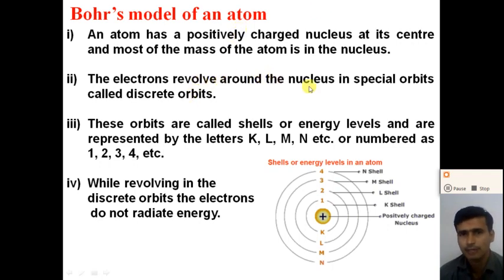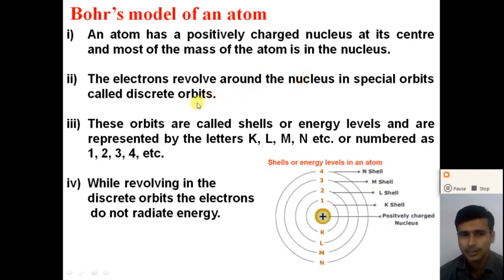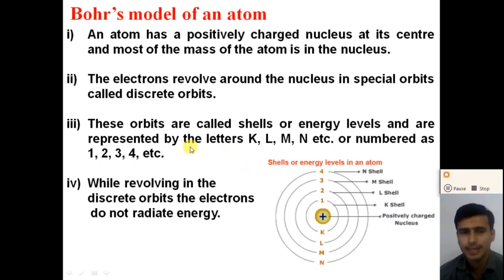Second, the electron revolves around the nucleus in a specific orbit called the discrete orbit. Bohr states that the revolution of the electron around the nucleus is in a spatial orbit, and these orbits are called the discrete orbits or shells or energy levels. The electrons revolve in a specific orbit, and these shells are represented by the letters K, L, M, N, and so on, or by numbers 1, 2, 3, 4, representing the first, second, third, and fourth orbits.